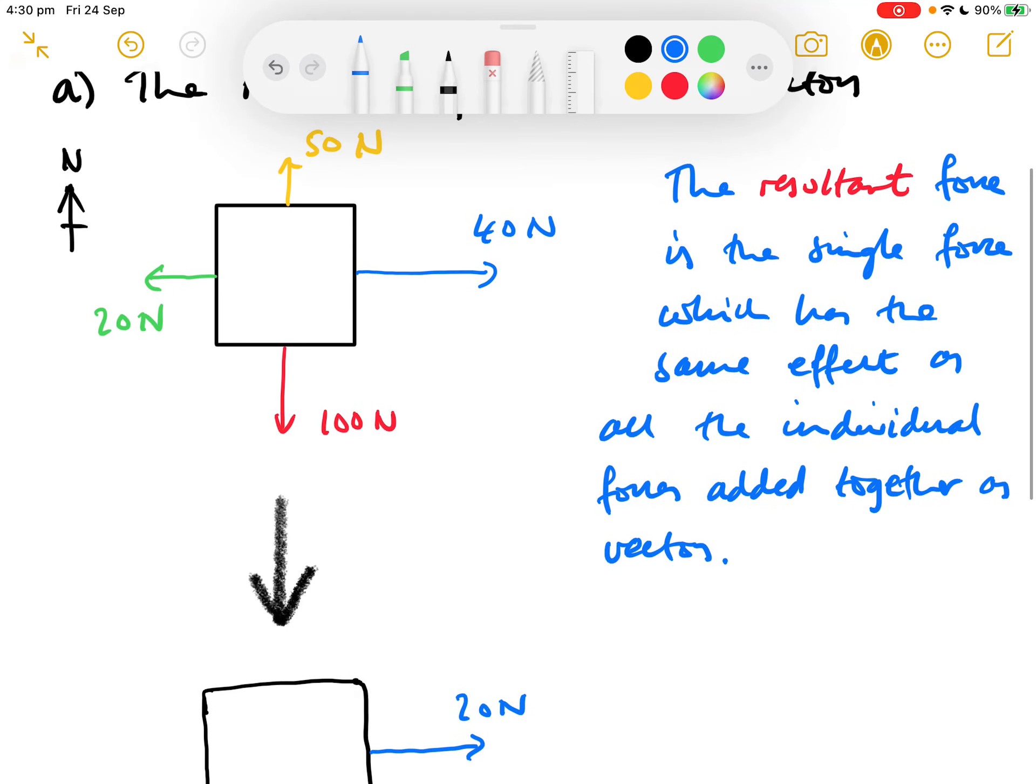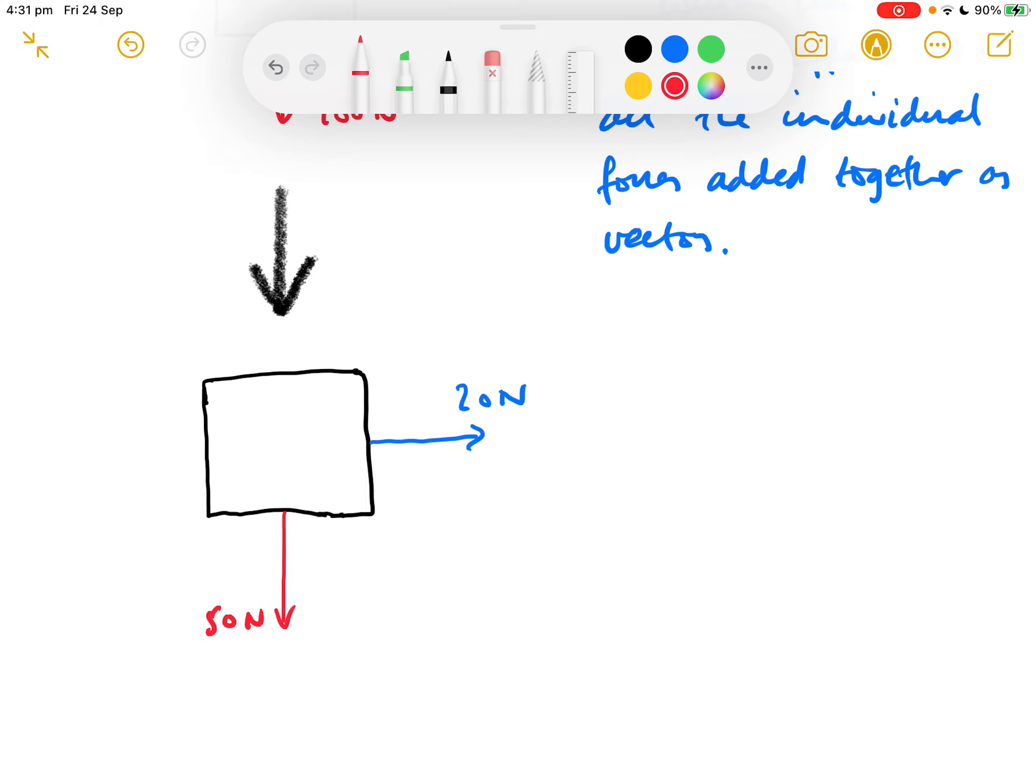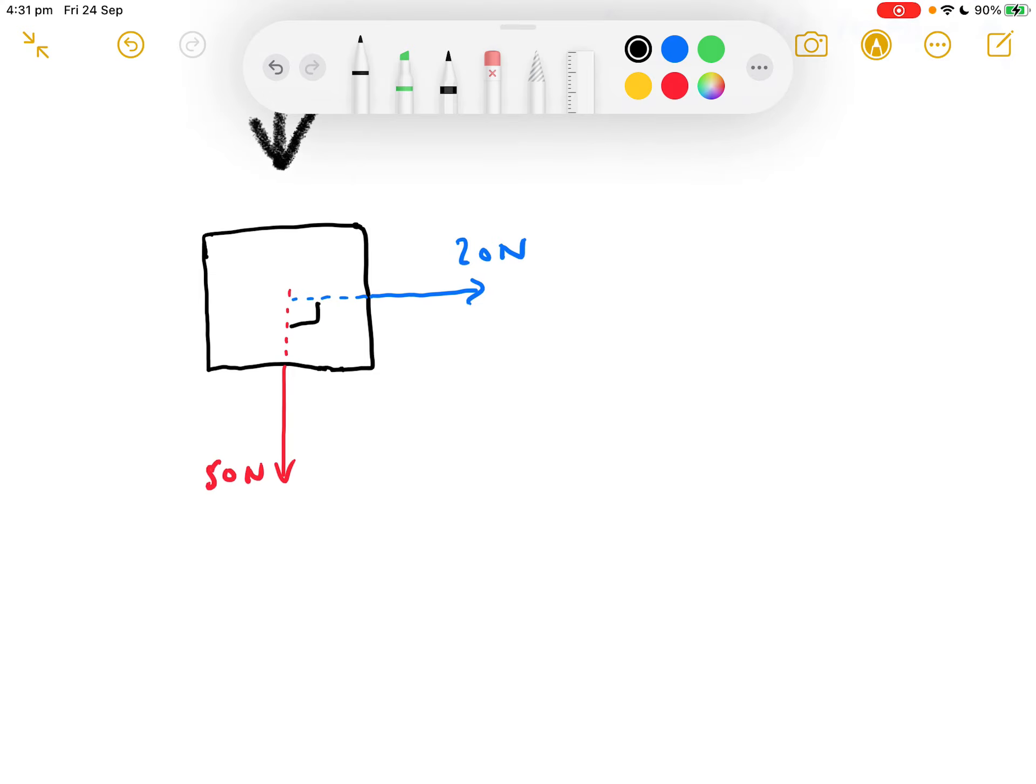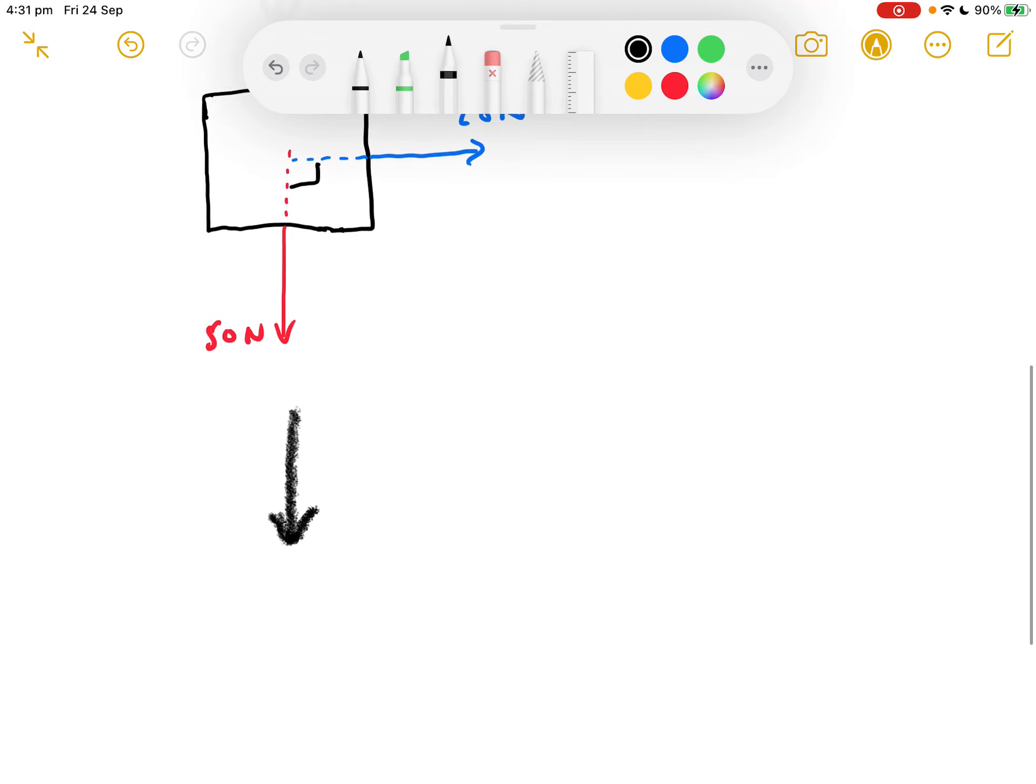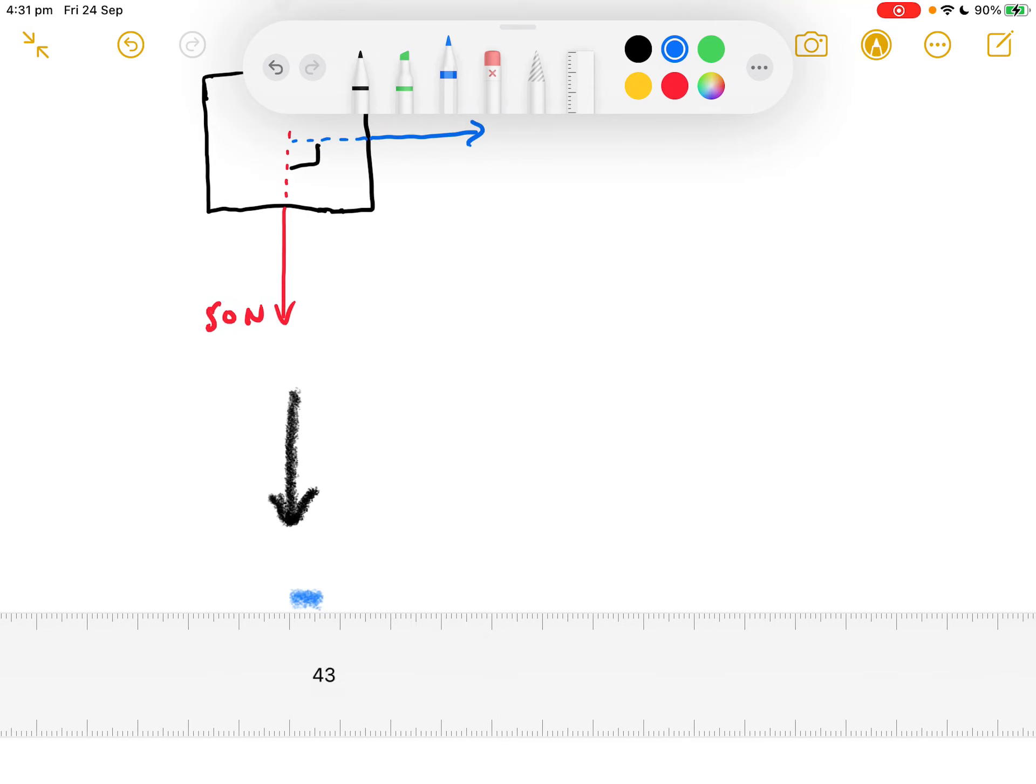If I do the same in the north-south direction, which is perpendicular to the east-west one, I've got 50 north and 100 south. So that gives me 50 Newtons south. Now I'm not finished yet because I've still got two forces there and I really want to end up with one. So I have to add these two together tip to tail.